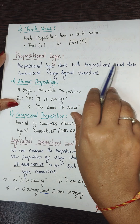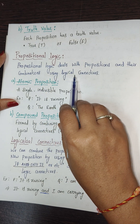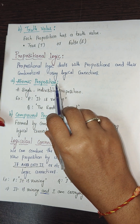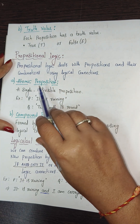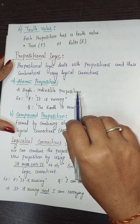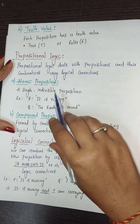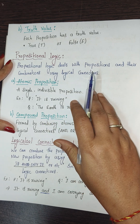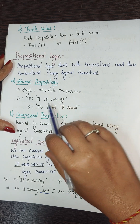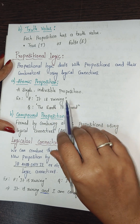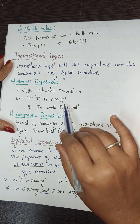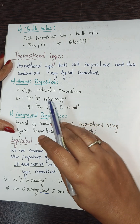The first type is an atomic proposition, which is a single or indivisible proposition — it has only one statement and cannot be divided further. For example, 'the earth is round' is an indivisible, single proposition.